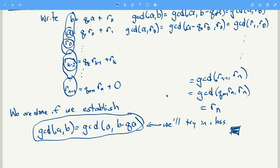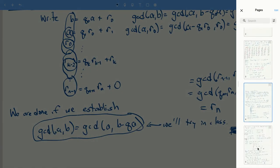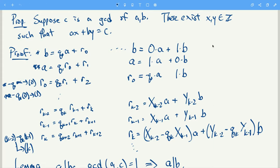Let's do a quick application. Suppose that c is a GCD of a and b. Then we can write c as ax plus by for some integers x and y. These integers x and y serve as a kind of certificate that c is truly the GCD of a and b. To find x and y, we go back to the sequence of equations from when we compute the GCD — just a sequence of applications of the division algorithm.